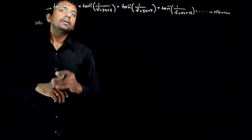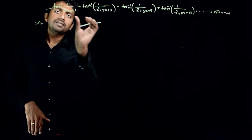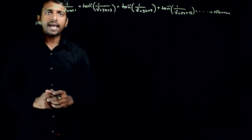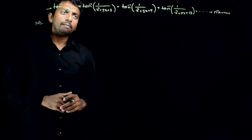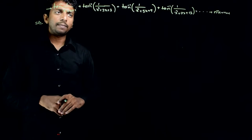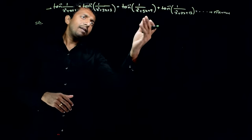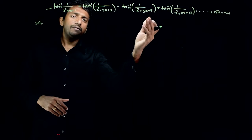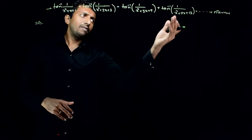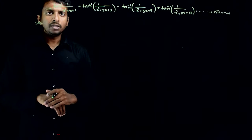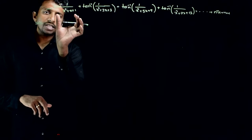You are asked to find the sum of this sequence: tan inverse of 1 by x squared plus x plus 1, plus tan inverse of 1 by x squared plus 3x plus 3, plus tan inverse of 1 by 5x squared plus 5x plus 7, and so on, up to 2n times.